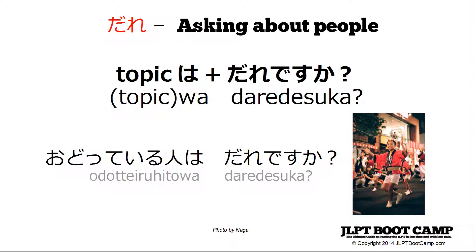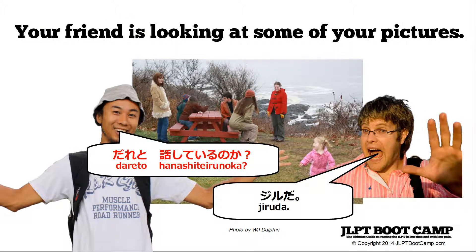Now you're looking at some more photos, and your friend asks, 'dare to hanashteru no ka?' And you respond, 'Jiru da.' He's asking who are you talking with in the picture. 'Dare to' — 'to' is a particle that means 'with,' 'dare' is 'who.' 'Hanashteru' is the present progressive, basically '-ing,' talking. And 'no ka' is how to form the question casually.